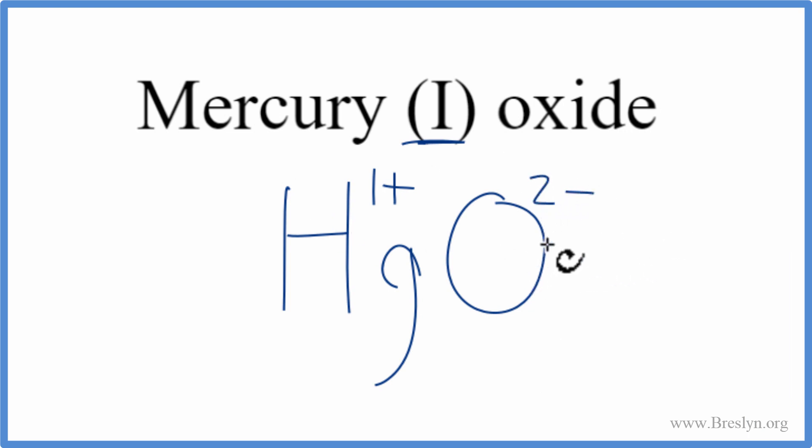So these should add up to zero to give us a net charge of zero, but they don't right now. We can change the subscript though to make that happen, and we can use something called the crisscross method. We can move this two here, this one here. We don't write the one by convention. Get rid of these charges here. And that's it. This is the formula for mercury(I) oxide.